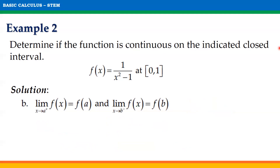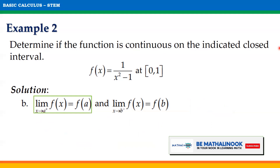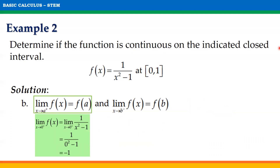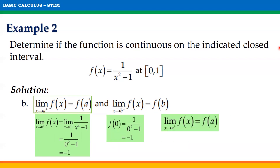Now let us check the second condition: the limit of f(x) as x approaches a from the right should equal f(a). Evaluating the limit of 1/(x²-1) as x approaches 0 from the right, we get 1 over (0 squared minus 1), which equals negative 1. Evaluating f(0), we get 1 over (0 squared minus 1), which also equals negative 1. Since both values are negative 1, the limit as x approaches a from the right equals f(a).